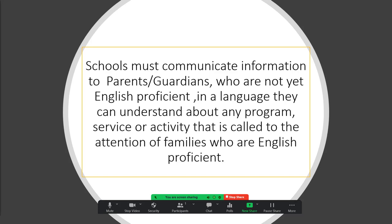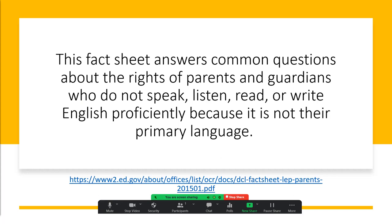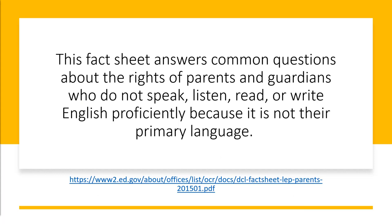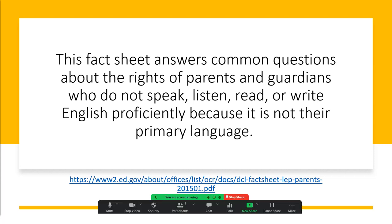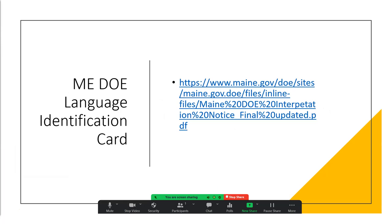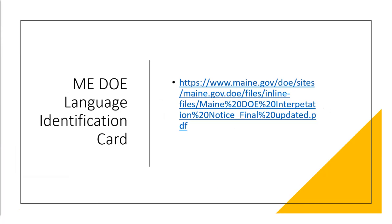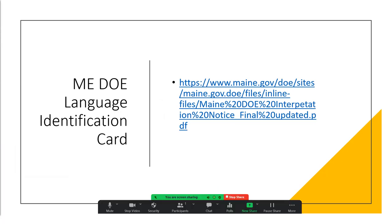Be sure to include your school health service providers and the staff that participate in school registration. This fact sheet answers common questions about the rights of parents and guardians who do not speak, listen, read, or write English proficiently because it is not their primary language. The fact sheet was developed by the US Department of Education and the US Department of Justice. Maine DOE has developed a language identification card, which should be in all locations that welcome families to a building. It provides the family a quick and easy way to indicate that they want and need interpreting services as they begin their communications with school personnel, and this link provides you access to that card.